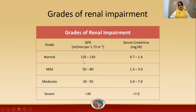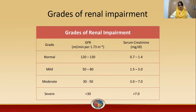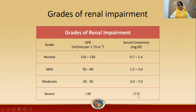In case of mild impairment, GFR falls to 50 to 80 ml per minute per 1.73 meter squared, and serum creatinine increases to 1.5 to 3. In moderate-severe impairment, GFR falls to 30 to 50 ml per minute per 1.73 meter squared, and serum creatinine rises to 3.3 to 7 mg per deciliter. In severe impairment, GFR falls below 30 ml per minute per 1.73 meter squared and serum creatinine rises above 7 mg per deciliter.